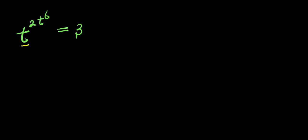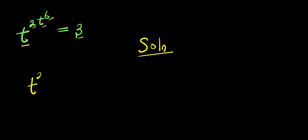Hello. How to solve t to the power of two times t to the power of six equals three. We are solving for the value of t that will satisfy this equation. So we have the solution right here. We can simply recall the problem: this is t to the power of two times t to the power of six, and this equals three.